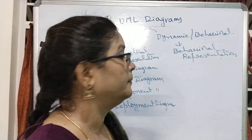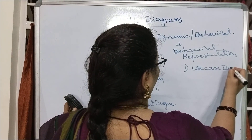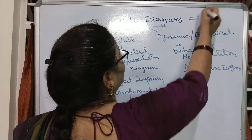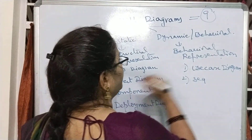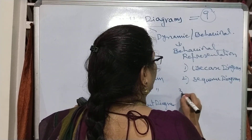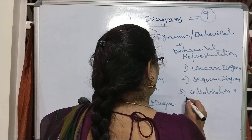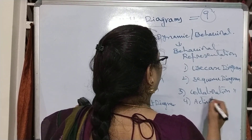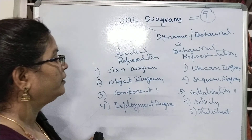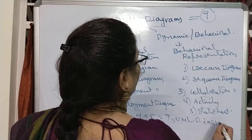In the behavioral diagrams, how the things are changing — how the process is going to change — the first behavioral diagram is use case diagram. Next is sequence diagram. Total number of diagrams are 9. So here we have 4 static diagrams. Under dynamic: sequence diagram, collaboration diagram, activity diagram, and state chart diagram. 4 plus 5 equals 9 UML diagrams in total.